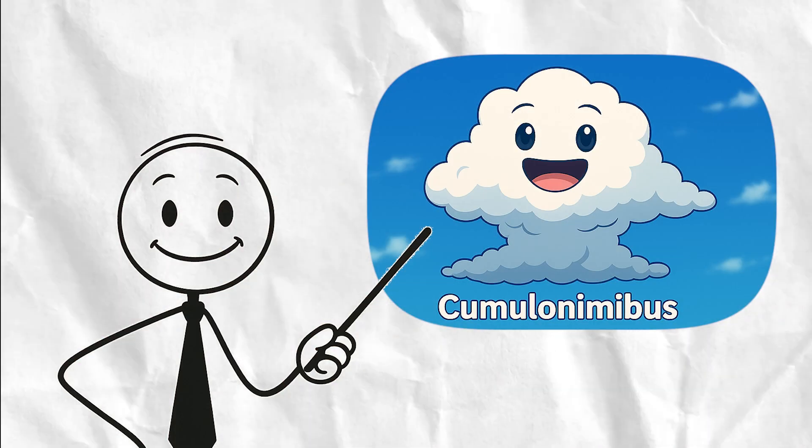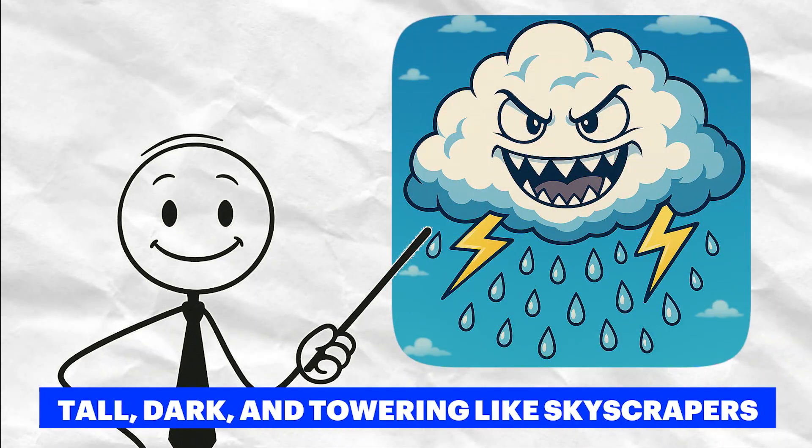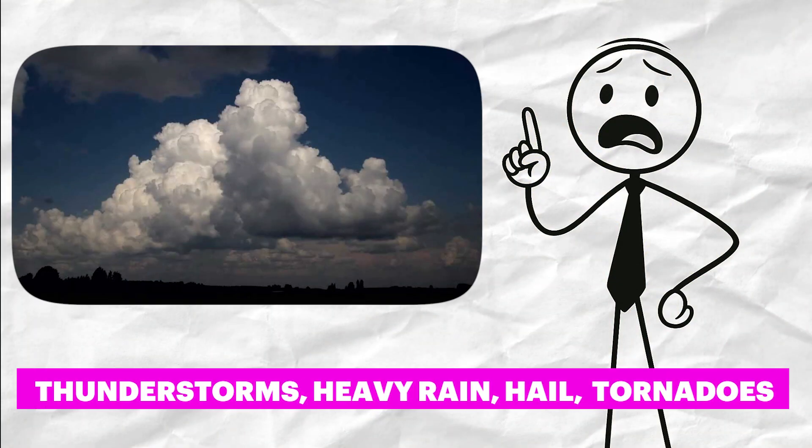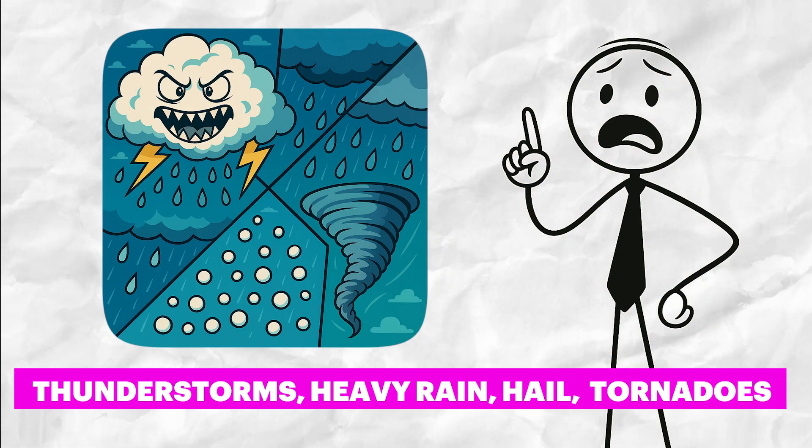Then we have cumulonimbus clouds. These are the monsters of the sky. Tall, dark, and towering like skyscrapers. If you see one of these, expect action, thunderstorms, heavy rain, hail, maybe even tornadoes. They mean business.